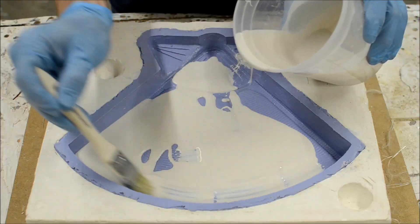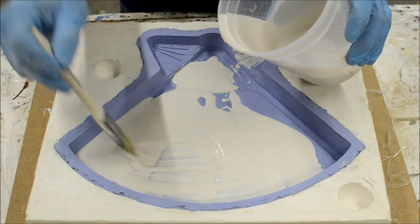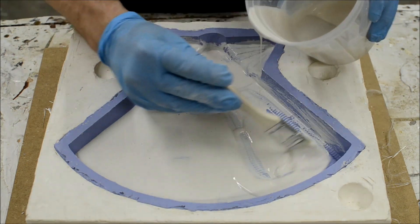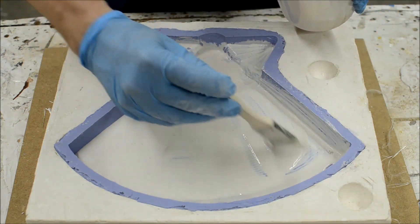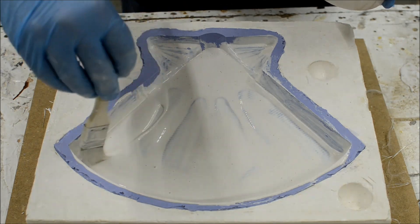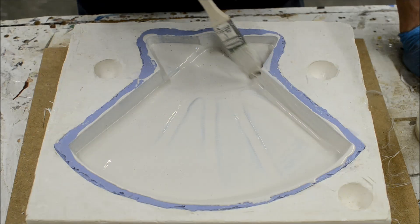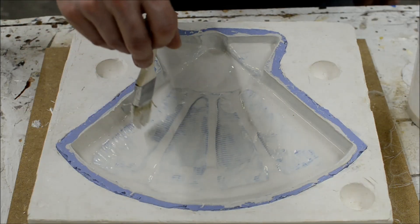When making fiberglass in a negative mold, lay down a surface coat of just resin. This will capture all the surface detail and help hide the texture of the fiberglass cloth. The resin may run down the vertical areas. Keep brushing it upward as the resin cures so you get adequate coverage.